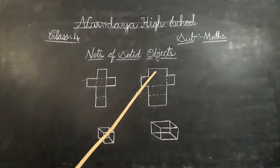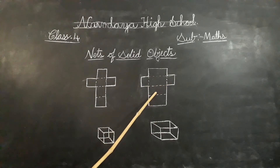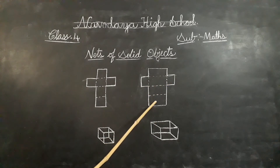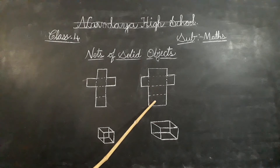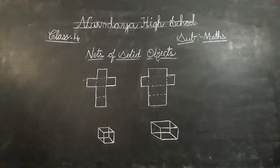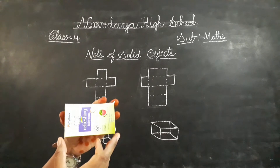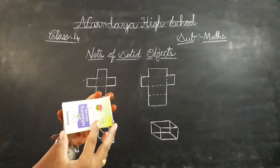Now we have cuboid. Count how many faces here? One, two, three, four, five, six. Six faces and all the faces are like rectangles. This is a cuboid.